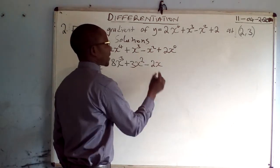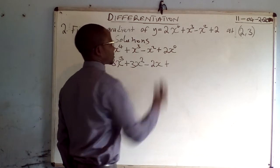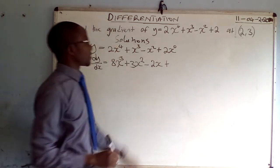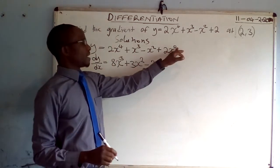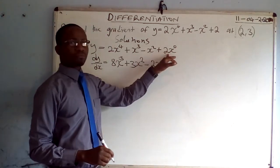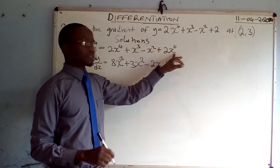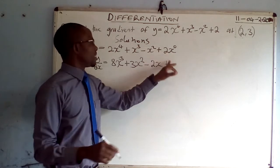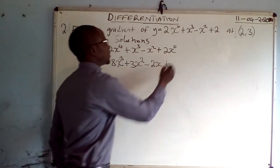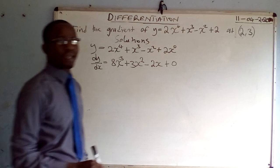So we have 2x to the power 2 minus 1, which is x to the power 1 — we do not write the power 1, so we just leave it as 2x. Then the last term: 0 times 2 gives 0, so that term disappears.